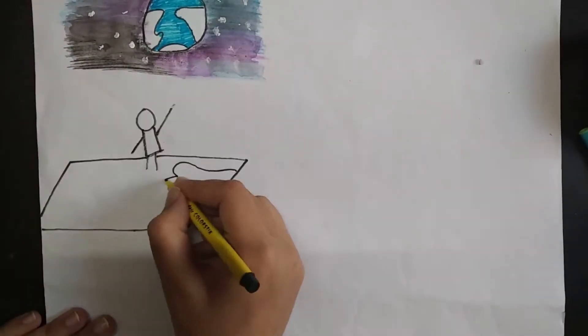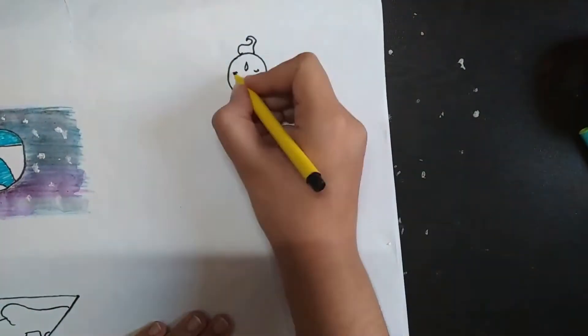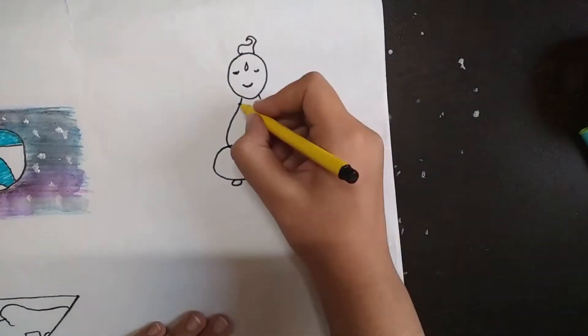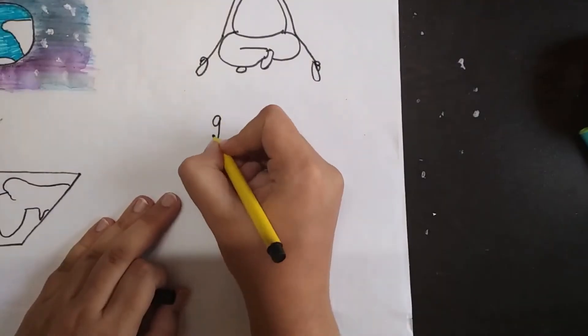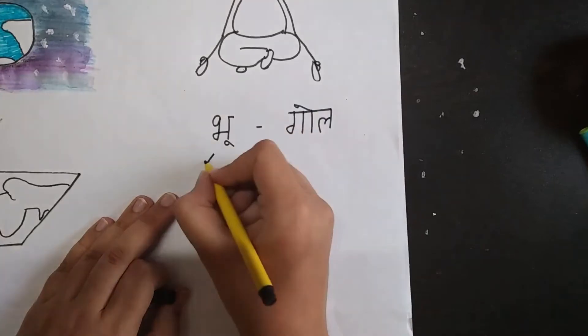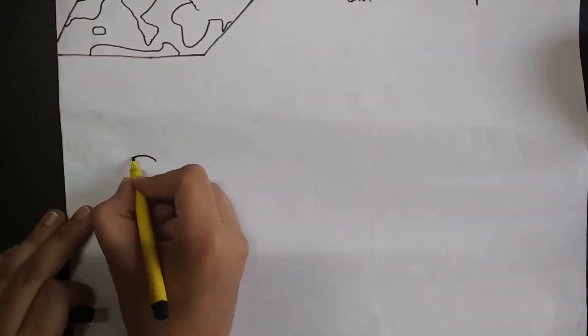It was said that ancients believed that the Earth is flat. Well, Indians knew better. And the simplest proof of it is in our language. You must be knowing that geography is called Bhugol in Hindi, which literally means spherical Earth.